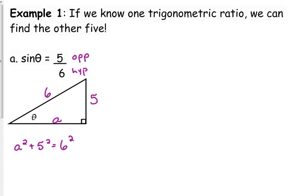So a squared plus five squared is equal to six squared. The two legs squared added together equals the hypotenuse squared. So a squared plus 25 equals 36, that says a squared equals 11. We need to take the square root. Well, 11 is not a perfect square, so we're going to leave it as the square root of 11.